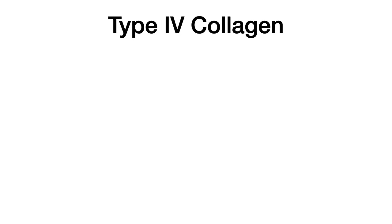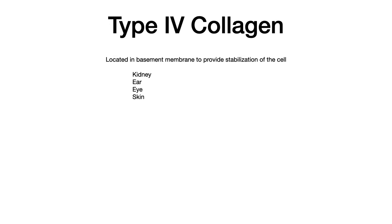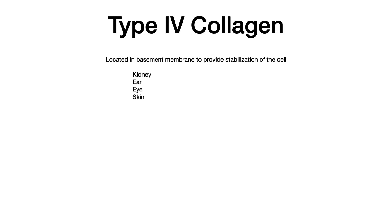That's type 3 collagen. Let's conclude today's video by talking about type 4 collagen. Type 4 collagen might be the collagen that gets tested the most on test day. It's located in the basement membrane and provides stabilization of the cell by stabilizing the basement membrane. The tissues it's found in include the kidney, the ear, the eye, and skin. It shouldn't surprise you that when we talk about diseases associated with type 4 collagen, you see problems with the kidney, the ear, the eye, or the skin.